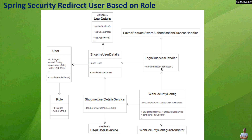Then we need to code an AuthenticationSuccessHandler class and override the onAuthenticationSuccess method, which will be invoked upon successful authentication of the user. We write the code for redirecting users based on their roles in this method, and we configure the success handler in the Spring Security configuration class.